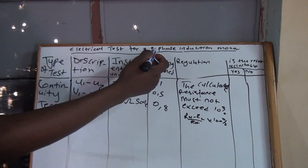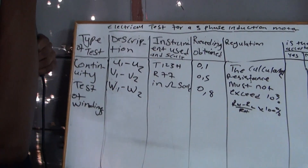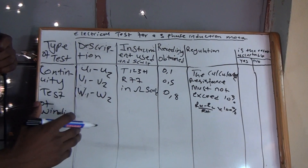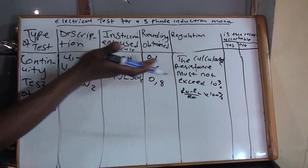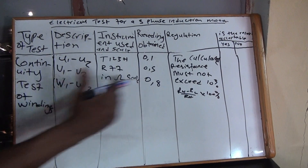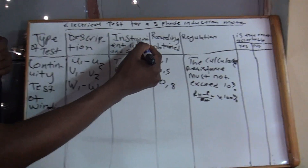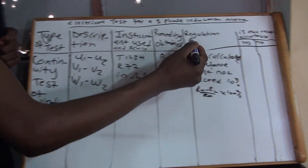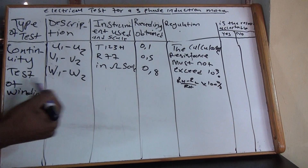Welcome to College Netted Engineering with Bongani Kumete. Today we'll be doing an electrical test inspection for a three-phase induction motor. During your trade test, you'll only be given the top of the sheet — this information will not be given to you. You'll be required to fill in the type of test, description, instrument used, scale reading obtained, regulation, and whether the result is acceptable or not.